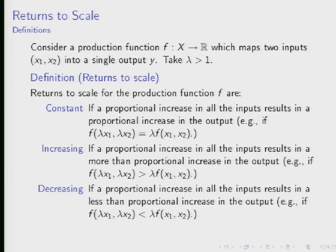Can someone think of an example technology featuring constant returns to scale? Chris suggests peanut butter and jelly sandwiches. The inputs are peanut butter, jelly, and sliced bread. Starting with two slices of bread, one tablespoon of peanut butter, and one tablespoon of jelly, we get one sandwich. If we double all inputs — four slices, two tablespoons of each — we can make exactly twice as many sandwiches.